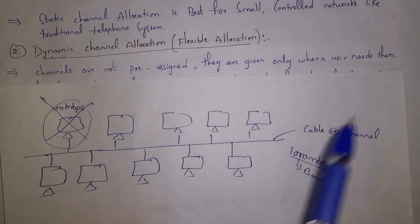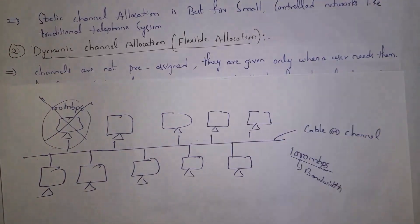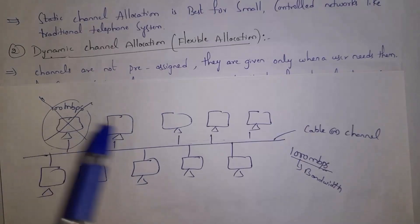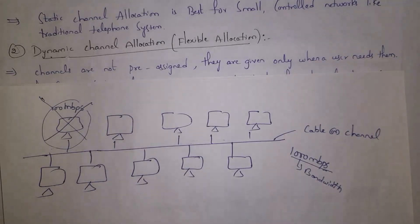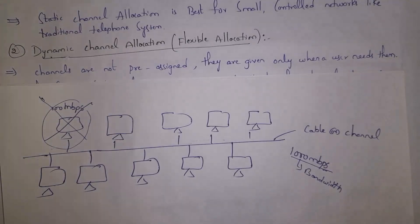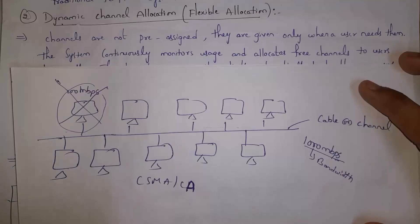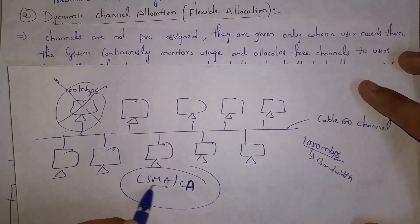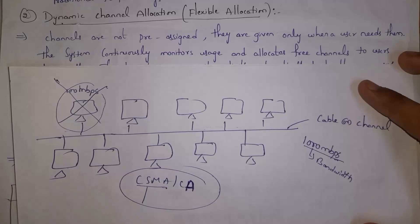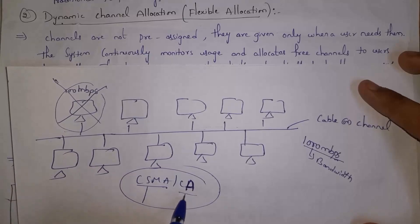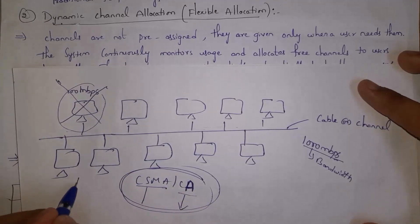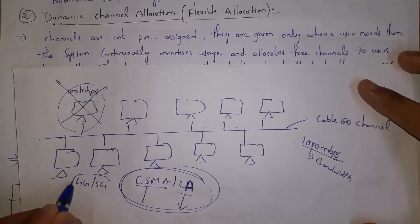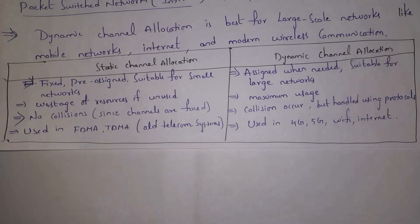In dynamic channel allocation, channels are not pre-assigned — they are given only when a user needs them. For example, bandwidth is given to a user only when they want to send data, so bandwidth is not wasted. Dynamic channel allocation is used by CSMA/CA (Carrier Sense Multiple Access / Collision Avoidance) protocol. Present 4G and 5G networks use dynamic channel allocation, making it suitable for larger networks.